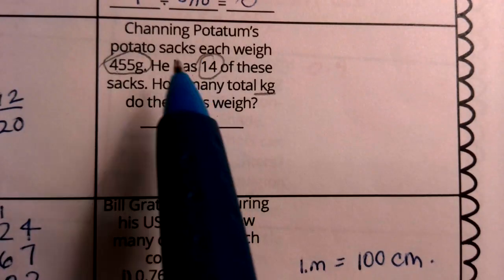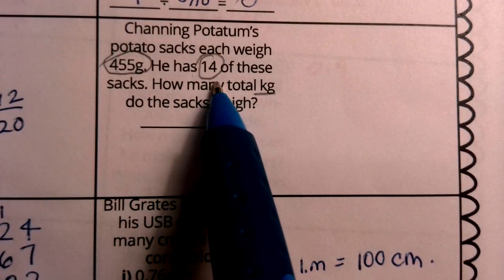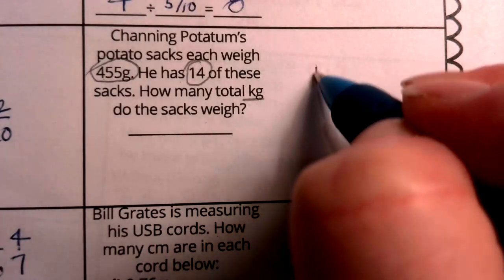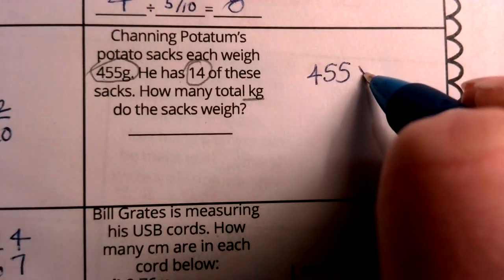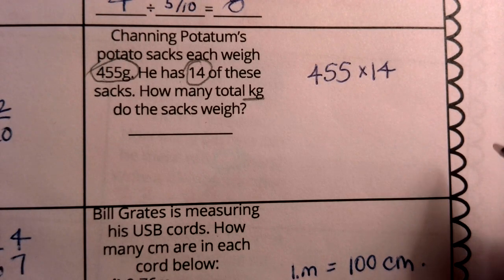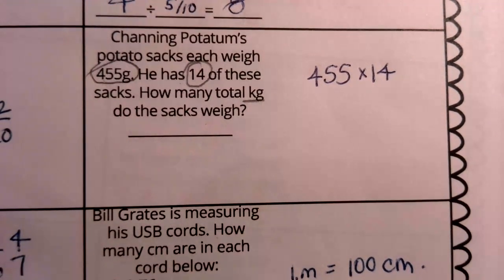A couple different things going on in the problem. So the first thing I need to decide is what operation am I really needing to do here to figure out this situation with the potato sacks. I have 14 potato sacks, and they each weigh 455 grams. So potato sack one weighed that, potato sack two weighed that, potato sack three and four and five, all the way up to 14. So this is a multiplication question because we have 455, and we're multiplying that by 14. Yes, you must show your strategy for multiplying here.